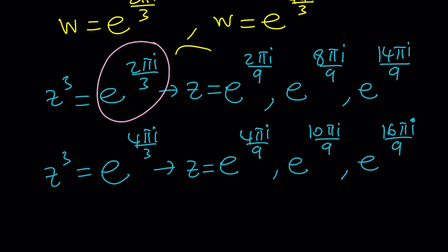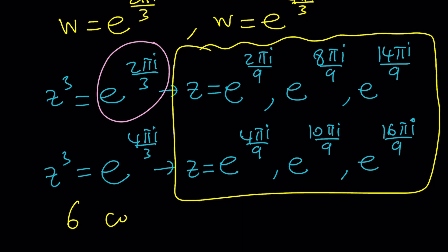So we got six solutions, and is that normal? Yes, because this is six degree, and you're supposed to get six complex solutions. So that's pretty much the first method.